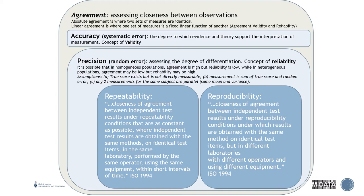Accuracy is the degree to which evidence and theory support the interpretation of measurement — once again the concept of validity, are you measuring what you intended to measure? A systematic error can also be considered bias. If there's a systematic bias in your data, you have a loss of accuracy.